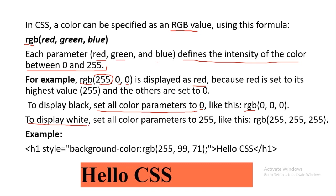If you want to display white, set all the parameters to their highest value, 255 — so RGB(255, 255, 255) — and whichever element you apply that value to, it will be white. Let's look into an example: we have heading 1 and background color is RGB(255, 99, 71). Depending on your requirements, you can adjust these values to get your desired output. Red, green, and blue can have a value from 0 to 255 — 255 is the highest, 0 is the lowest.